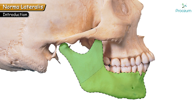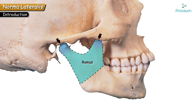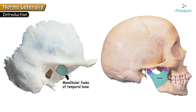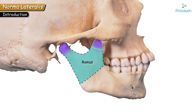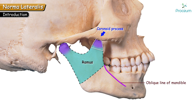The parts of the mandible seen are the ramus and part of the body. The ramus has two processes: the condylar process and the coronoid process. The condylar process is the posterior process, having a head and neck. The head of the condylar process articulates with the mandibular fossa to form the temporomandibular joint. The triangular projection present anteriorly is the coronoid process. Tracing the anterior margin of the coronoid process along the ramus continues down over the body of the mandible as the oblique line of the mandible.